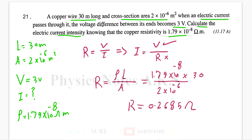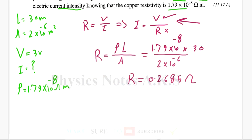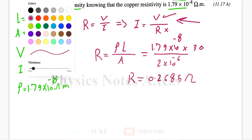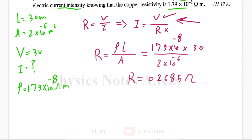And now, I substitute in here, I can simply find, I'll change the color, I use black, so I equal, again, I write the formula, V over R. The V is given as 3, and the R we found at 0.2685, so the current will be 11.17 ampere.